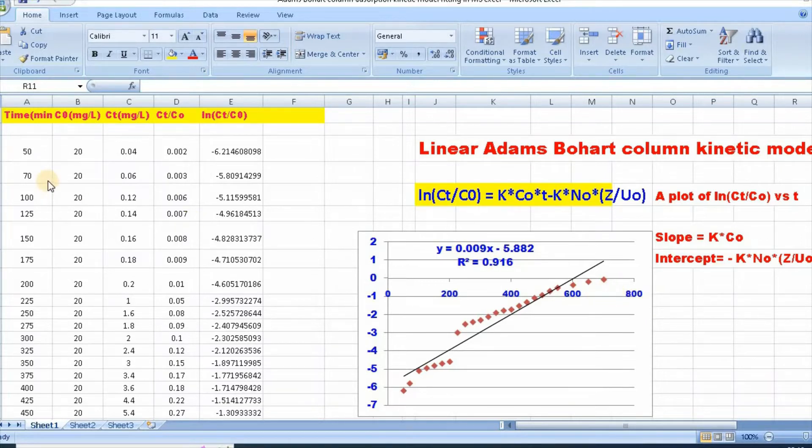In order to fit, I have taken data for time, initial concentration C0, and outlet concentration Ct at time t. Then, we need to convert Ct divided by C0. I have just converted equal to Ct divided by C0. Then, scroll down this.